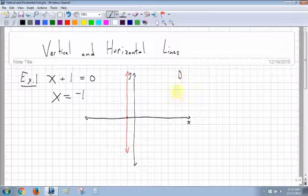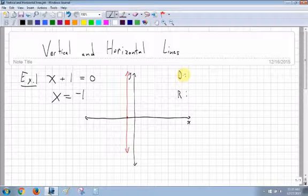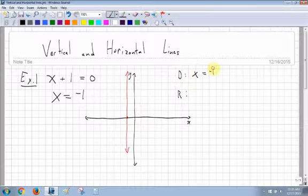Now let's look at the domain and range. For the domain, the domain remembers all my possible x values, and this happens to be only when x is equal to negative 1. That's it.